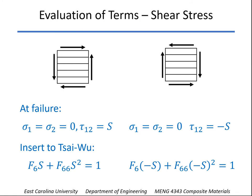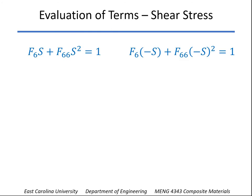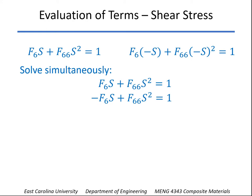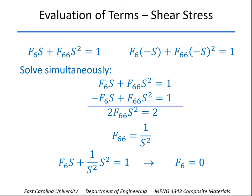Put those into the Tsai-Wu. Again, the only terms that we're going to have are the ones involving F6 and F66. And once again, we'll solve those simultaneously. So simply add the two together, which gets rid of F6, and we solve for F66 as just being 1 over the shear strength squared. And if we plug that into either one of the original equations, we find that the linear term F6 is equal to 0.